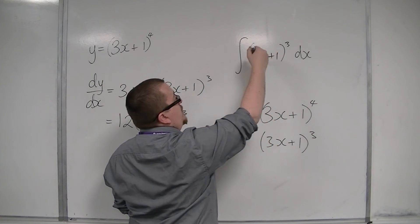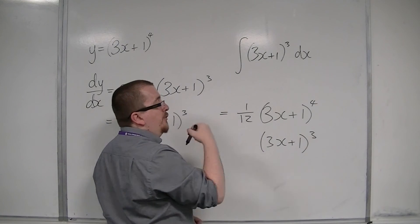So the integral of 3x plus 1 cubed dx is actually 1 twelfth times 3x plus 1 to the 4th, plus your constant.